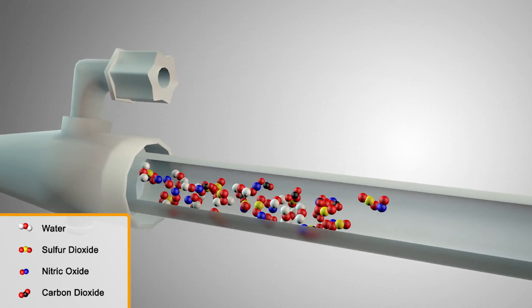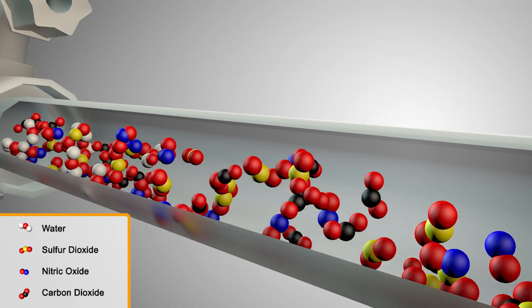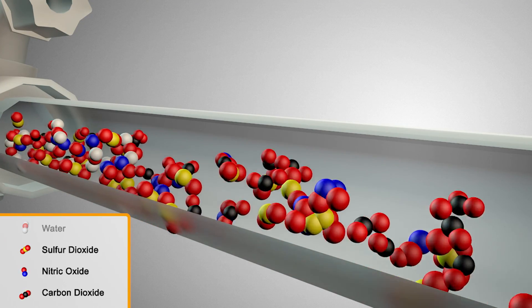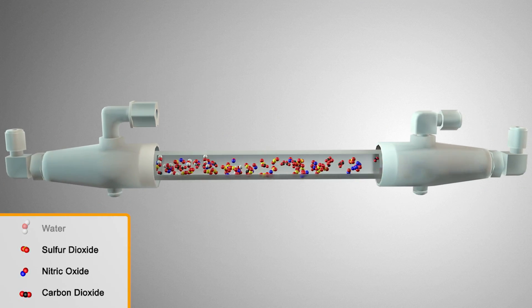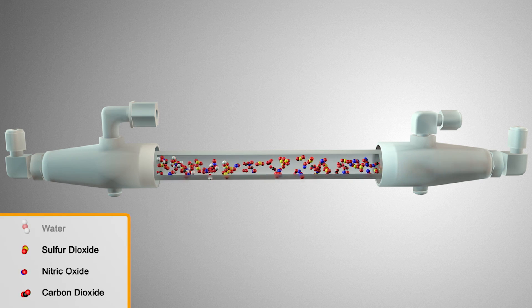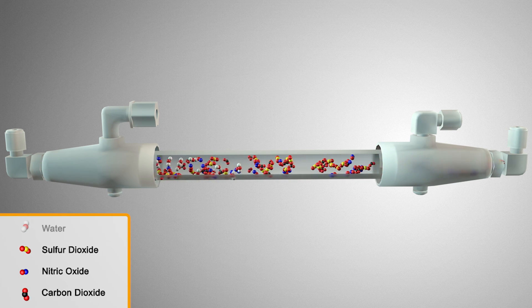The sample is then passed through a membrane dryer, where the water is removed through reverse osmosis. You are then left with a dry gas mixture containing sulfur dioxide, nitric oxide, and carbon dioxide.